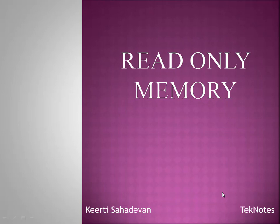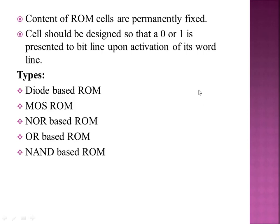ROM stands for Read Only Memory. ROM is used to store particular applications and programs. For example, in a washing machine, we have preset programs. When we select a program, it executes automatically. The program is stored in ROM. Once written, that data is permanently fixed — we cannot rewrite or modify it. That type of memory is ROM.